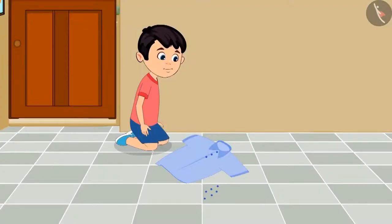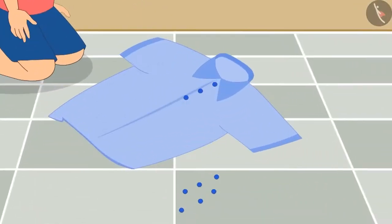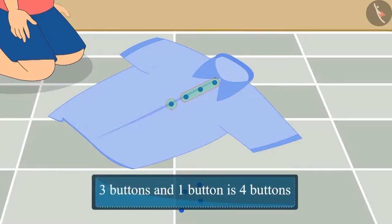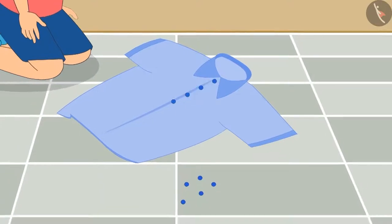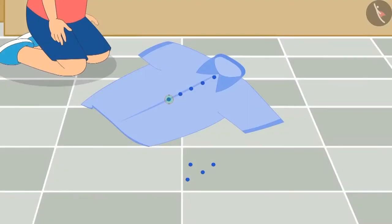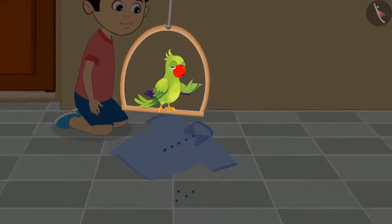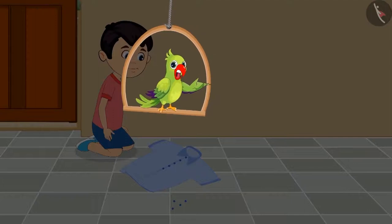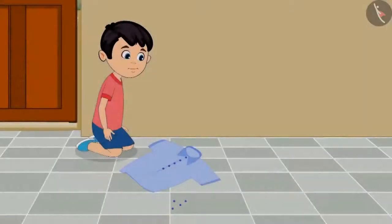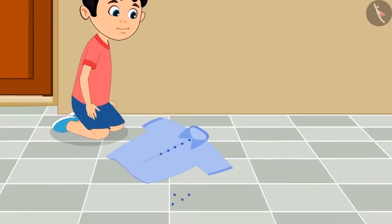Today, Chutu wants to stitch a few buttons on his shirt. He already stitched three buttons and then he stitched one more button — three buttons and one button is four buttons. Now Chutu has stitched one more button on his shirt, so four buttons and one more button is five buttons. Now count and tell how many buttons are stitched on Chutu's shirt. Yes, you are absolutely correct — a total of five buttons.